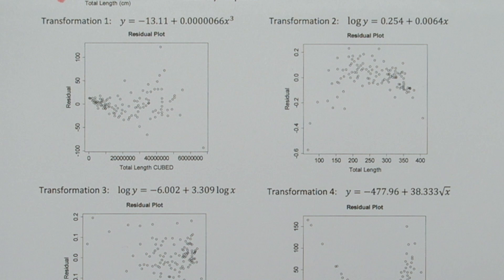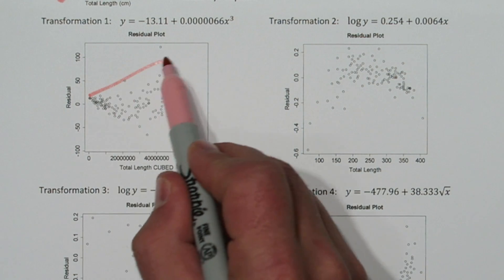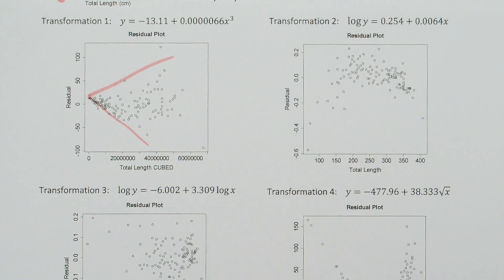Let's look through the residual plots and determine which transformations achieved linearity. Now in this first residual plot, we see something called fanning. You can see that the general pattern of the residuals looks like that.